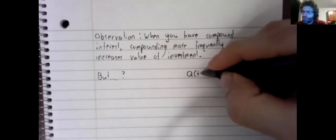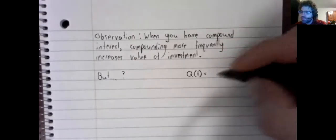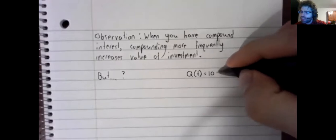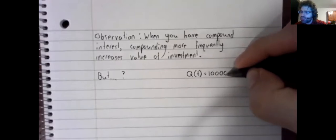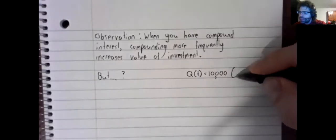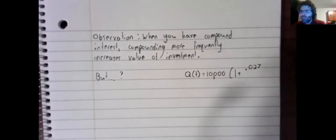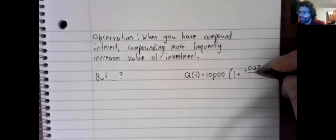Q of t equals 10,000. $1,000 invested at a 2.7% interest rate.